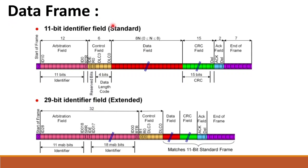If I want to represent the standard CAN frame format as a data frame, the RTR bit should be zero. Similarly, if I want to represent the extended CAN frame format also as a data frame, the RTR bit should be zero. The remote transmission request bit should always be zero for a data frame. All fields — start of frame, arbitration field, control field, data field, CRC field, acknowledgement field, and end of frame — are sent bit by bit from one node to another.